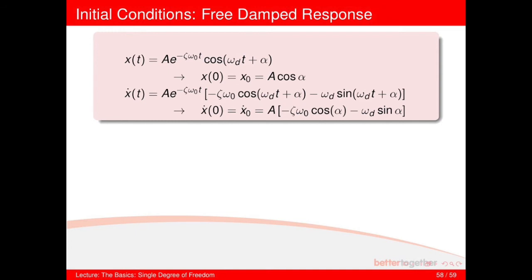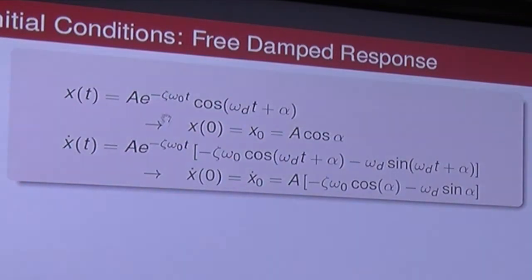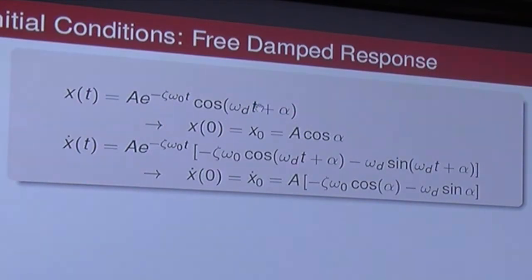This is where it gets more complicated. For x-dot of t, taking the derivative requires both the product rule — because you have two functions of time — and the chain rule for both terms. The derivative of e to the minus zeta omega-zero t gives e to the minus zeta omega-zero t times minus zeta omega-zero. The derivative of cosine(omega-d t) gives minus omega-d times sine(omega-d t). Because of the product rule, both of those terms appear.